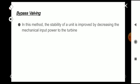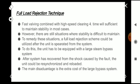The fourth method is full load rejection technique. Fast valving combined with high speed clearing time will sufficiently maintain stability in most cases. However, there are still situations where stability is difficult to maintain. To remedy these situations, a full load rejection scheme could be utilized after the unit is separated from the system. To do this, the unit has to be equipped with a large steam bypass system. After the system has recovered from the shock caused by the fault, the unit could be resynchronized and reloaded.